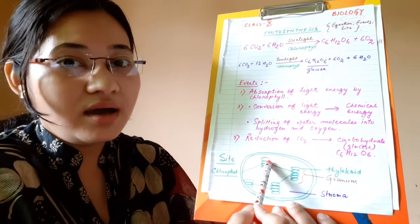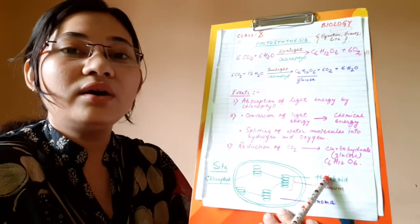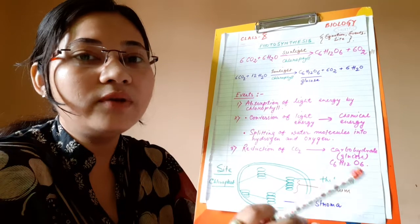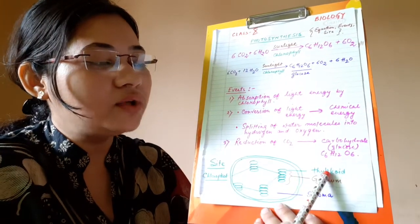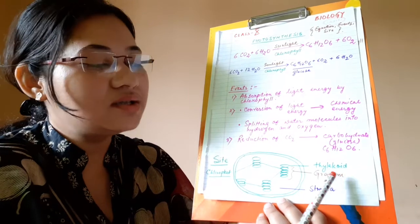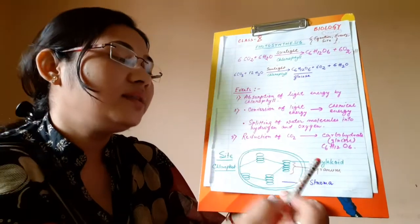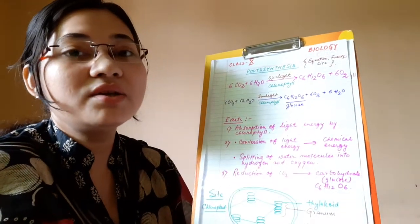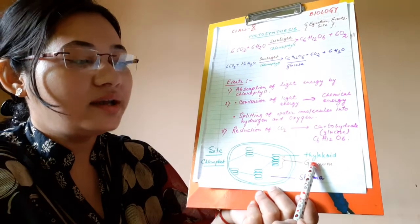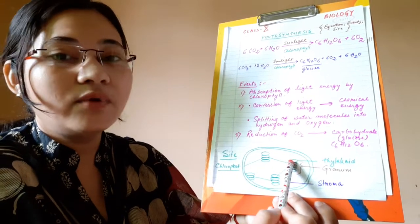These are separate grana. One granum is made up of a series of thylakoids. In the membrane of the thylakoid, chlorophyll molecules are present. So chlorophyll pigments are present in the membrane of the thylakoid sacs. Thylakoid sacs are present in the grana, and grana are present in the chloroplastid. In higher classes, you will see that photosynthesis takes place in two steps: light reaction, which occurs in the granum, and dark reaction, which occurs in the stroma — that is the matrix of the chloroplast.